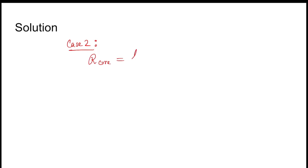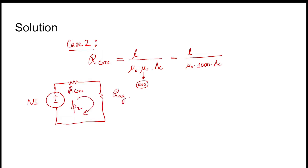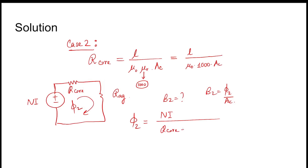In Case 2, reluctance of core equals L divided by mu_0 times mu_r times A_c. But here mu_r is not infinite; it is 1000. So R_core equals L_core divided by (mu_0 times 1000 times A_c). The magnetic circuit now has the same MMF (NI), with R_core and R_ag in series, and phi_2 circulating. B₂ is being asked, which equals phi_2 divided by A_c. Phi_2 equals MMF divided by (R_core + R_ag).